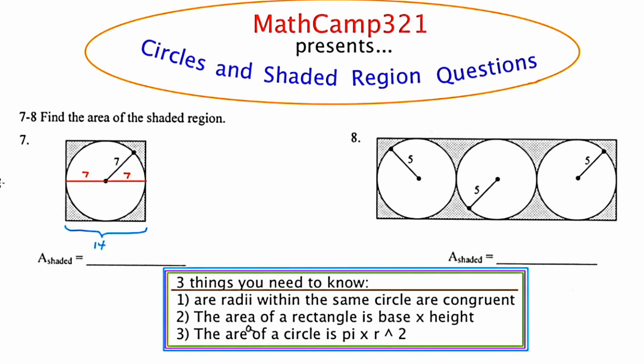Starting again at the center, I'm going to do the same sort of thing with the radius, but this time going straight up and straight down vertically. That orange radius would be 7, and going straight down that radius would also be 7. This means from top to bottom is also a length of 14. Because the dimensions are the same, we actually have a square, and I'm going to find the area of that square by multiplying base times height, or 14 by 14.